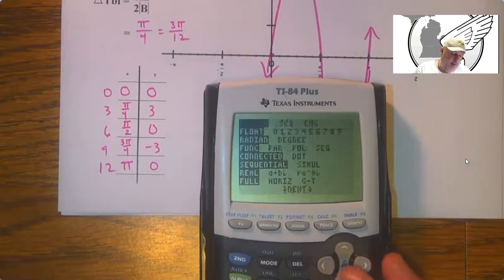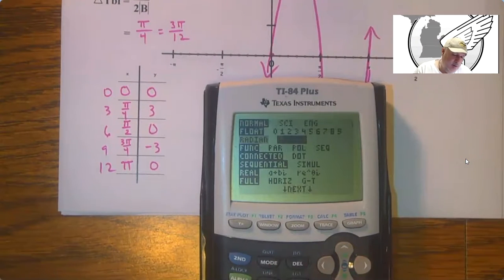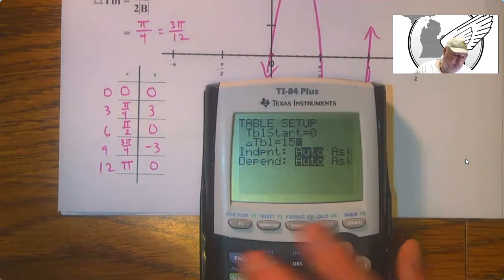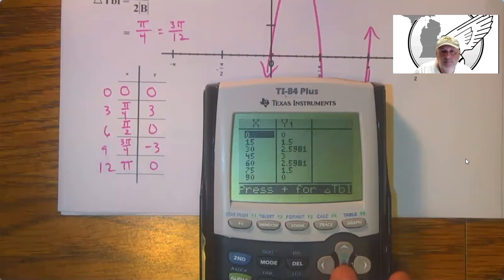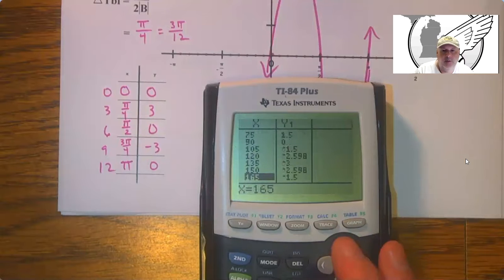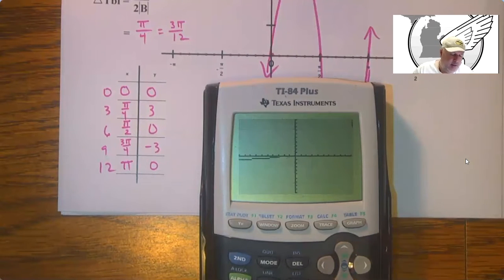You can also do the other thing. Go to degree mode and set your table by 15 degrees. Same thing. So whatever works for you. I'm going to end up at 180 there.